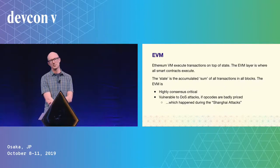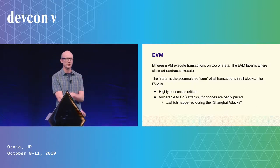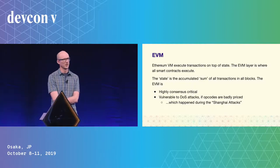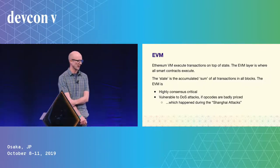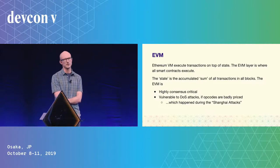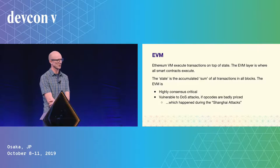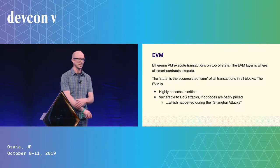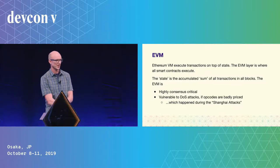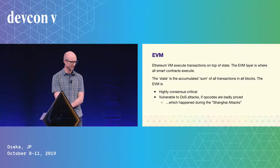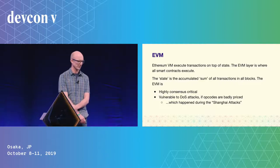There's the EVM, which is the one thing everyone knows exists in Ethereum — this is where smart contracts operate. These smart contracts execute on top of the state, which is the global state of where everything is right now, basically the accumulated result of all transactions in the history of Ethereum. This is also highly consensus critical.